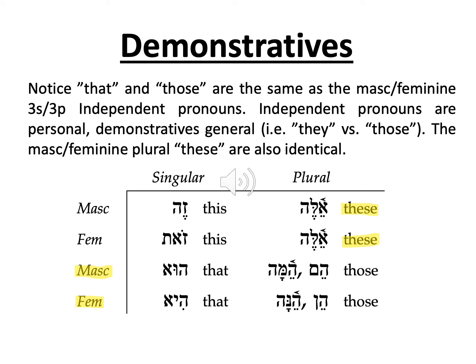Demonstratives are this, that, these, those. Demonstrative pronouns are pronouns, meaning that they're taking the place of a noun. For instance, instead of 'I want tomatoes,' I would say 'I want those.' The pronoun 'those' stands in place for the noun 'tomatoes.' Notice that the demonstrative pronouns for 'that' and 'those' — masculine and feminine — are the same as the independent pronouns, meaning that he and she may also be translated, if necessary, as 'that.' And 'them' can actually be 'those.' Context will give away which to use.